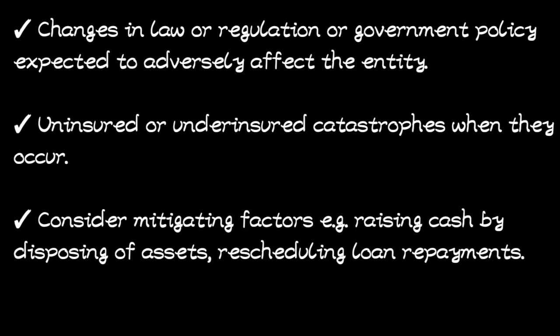Another indicator is uninsured or underinsured catastrophes when they occur — for example, if business premises catch fire and were not insured or were underinsured, the entity will face a huge loss and may struggle to continue operations. Finally, consider mitigating factors such as raising cash by disposing of assets or rescheduling loan repayments. If the entity must sell assets to raise cash or must request creditors to extend the repayment period, it shows they may have problems continuing operations.